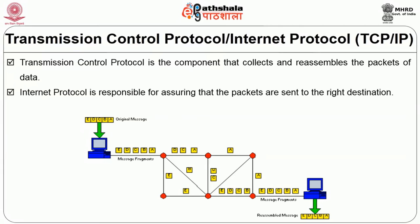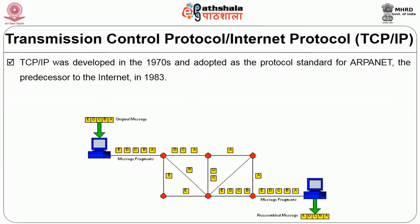The Internet Protocol (IP) is responsible for ensuring that packets are sent to the right destination. TCP takes care of creating packets and sending them across, while IP ensures all split packets reach the correct destination. Packets may not travel sequentially — the last packet can arrive first — and IP reassembles them. TCP/IP was developed around 1970 but adopted in 1983 as the protocol standard for ARPANET, the predecessor to the internet.